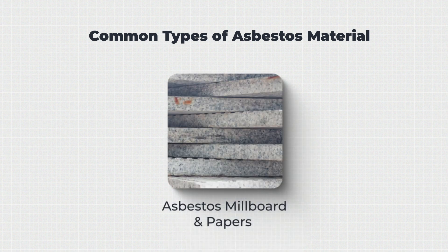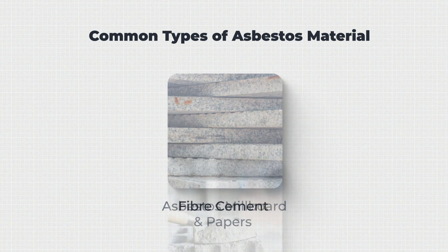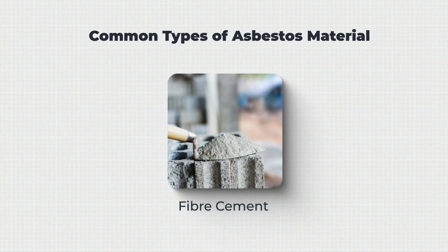Asbestos millboard and papers are paper-based materials infused with asbestos to give extra insulation when used with electrical equipment and circuitry. Fibre cement, containing between 5–15% asbestos fibres, was known for its brittle but durable qualities, often used for outdoor pipes and waterproofing. Fire bricks were also made from this substance.